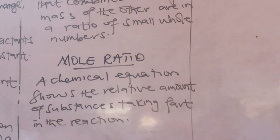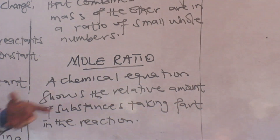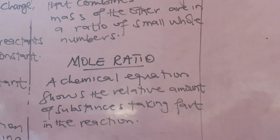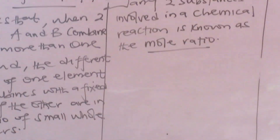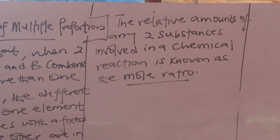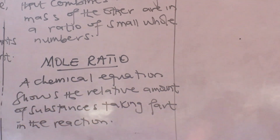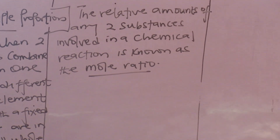Now the concept of mole ratio. Sometimes during a chemical reaction, they will ask you to calculate the concentration of the acid. But when you check the question, you don't have any information about the acid — only the volume of acid used. But you have a lot about the base. Since the base and the acid are in the equation, you can use the mole ratio concept. A chemical equation shows the relative amount of substances taking part in the reaction. The relative amount of any two substances involved is known as the mole ratio.